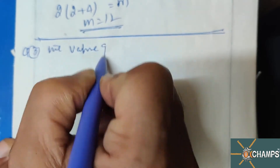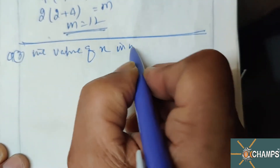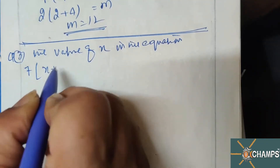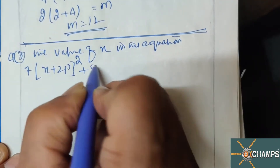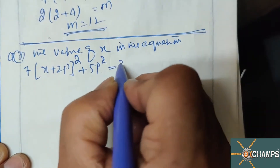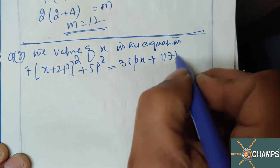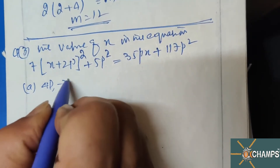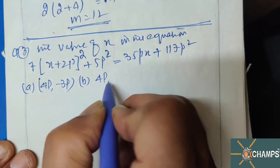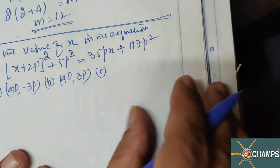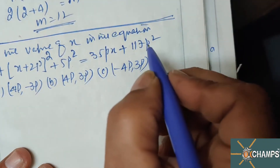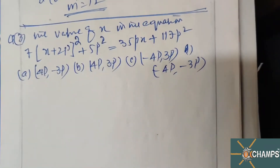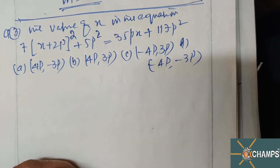Question number 3: find the value of x in the equation 7(x + 2p)² + 5p² = 35px + 117p². The four options are: (A) 4p, -3p; (B) 4p, 3p; (C) -4p, 3p; (D) -4p, -3p.